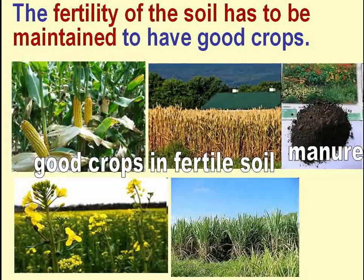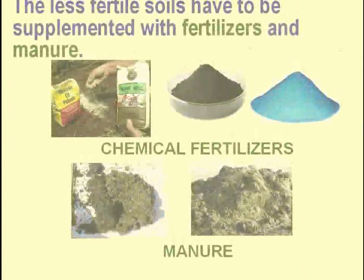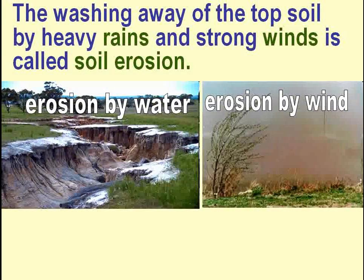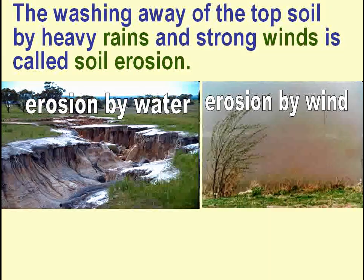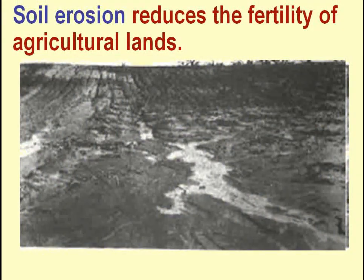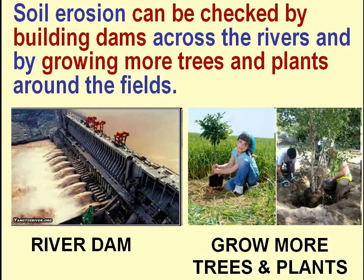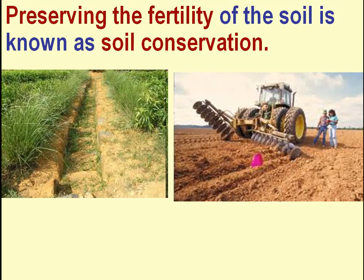The fertility of the soil has to be maintained to have good crops. The less fertile soils have to be supplemented with fertilizers and manure. The washing away of the top soil by heavy rains and strong winds is called soil erosion, which reduces the fertility of agricultural lands. Soil erosion can be checked by building dams across rivers and by growing more trees and plants around the fields. Preserving the fertility of the soil is known as soil conservation.